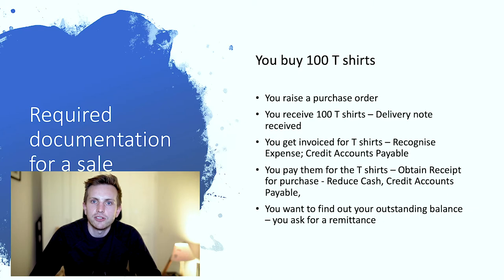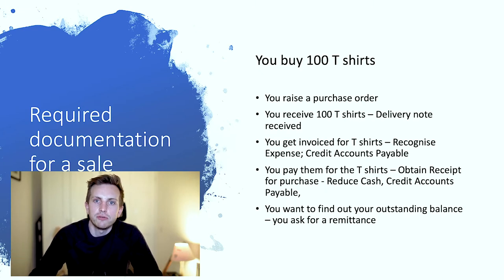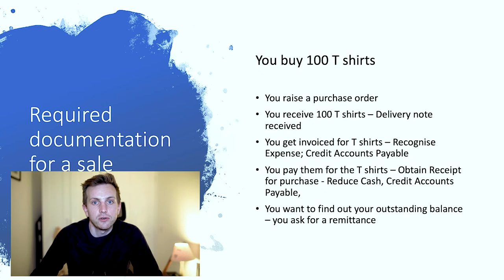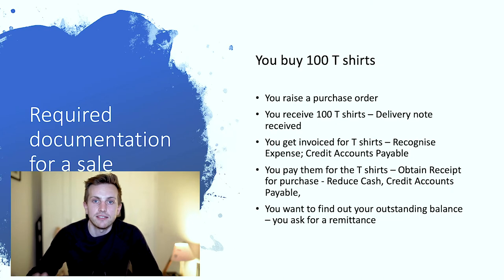Now I'm going to go through the documentation you receive as part of your business to keep track of transactions. Say you buy a hundred T-shirts — you raise a purchase order to say this is the purchase you want to make. When you receive the T-shirts, you receive a delivery note confirming receipt. The company then invoices you for the hundred T-shirts, at which point you debit your expense and credit your accounts payable, knowing you have 30 days to make payment. When you pay, you receive a receipt, credit your cash account, and debit your accounts payable to clear the amount owed.